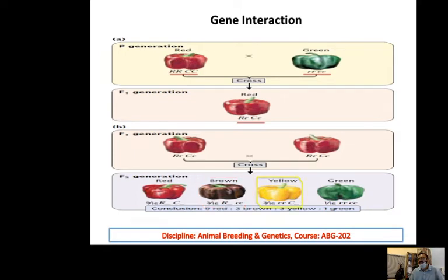The third phenotype occurs when the second gene is dominant and the first is recessive, giving yellow. And the last one, when both are recessive, the phenotype is grey. So there are four different types of phenotypes with a ratio of 9:3:3:1.